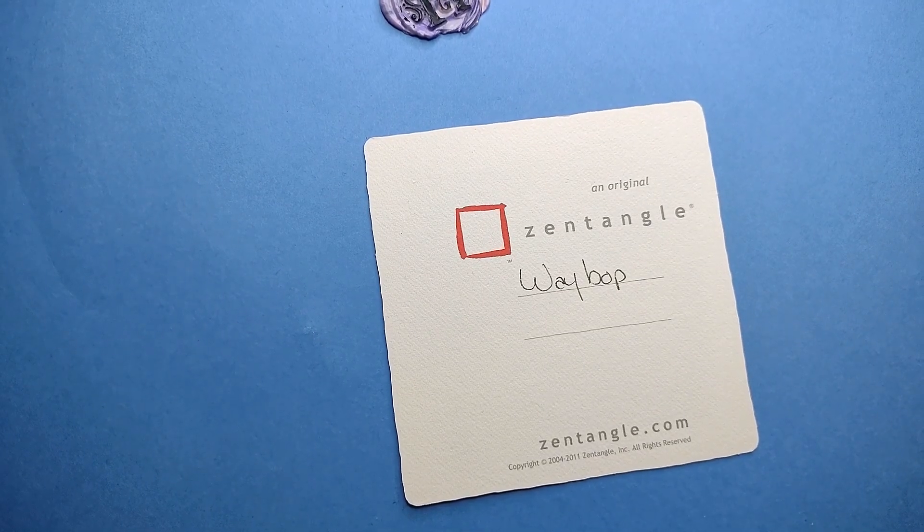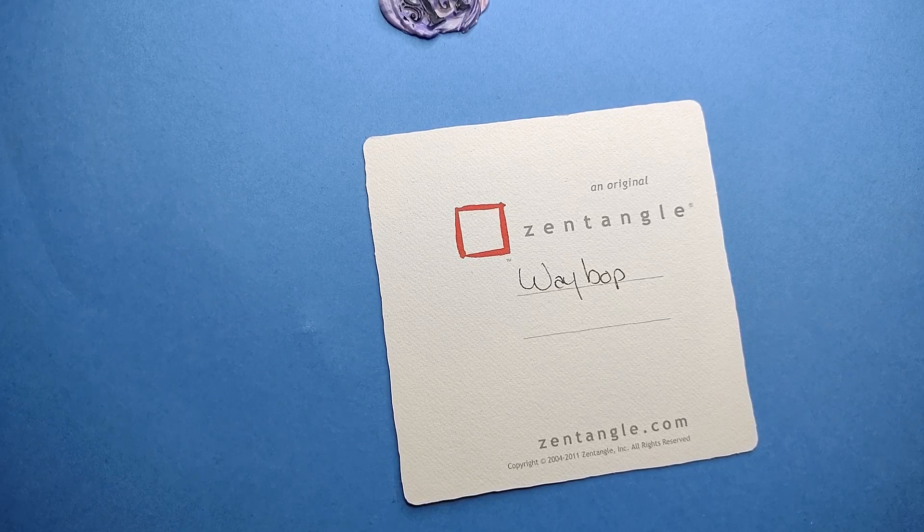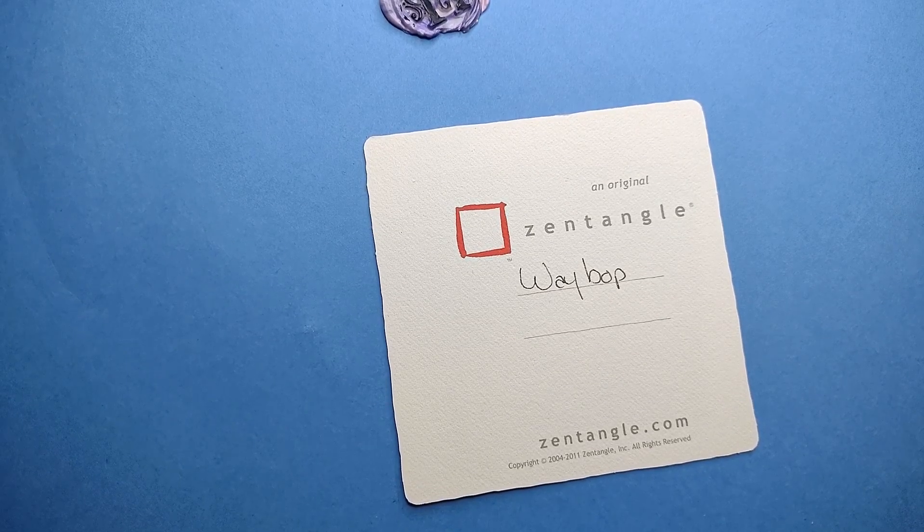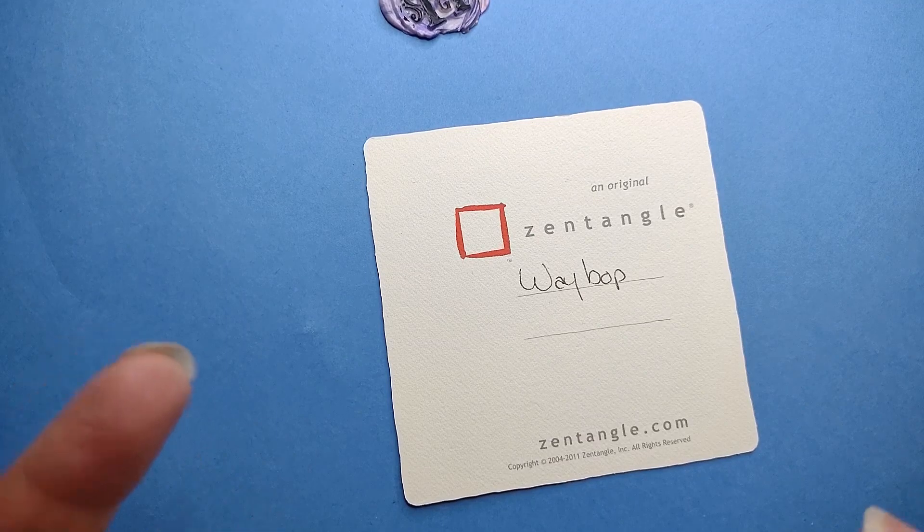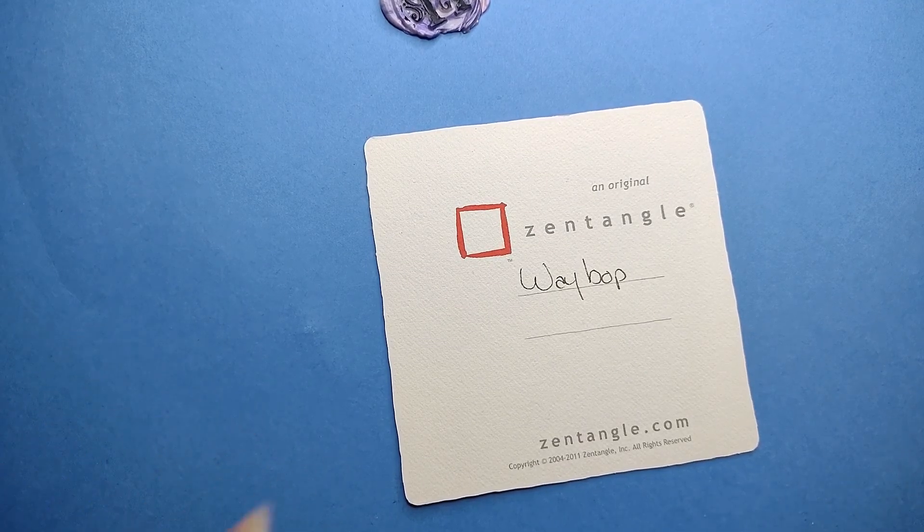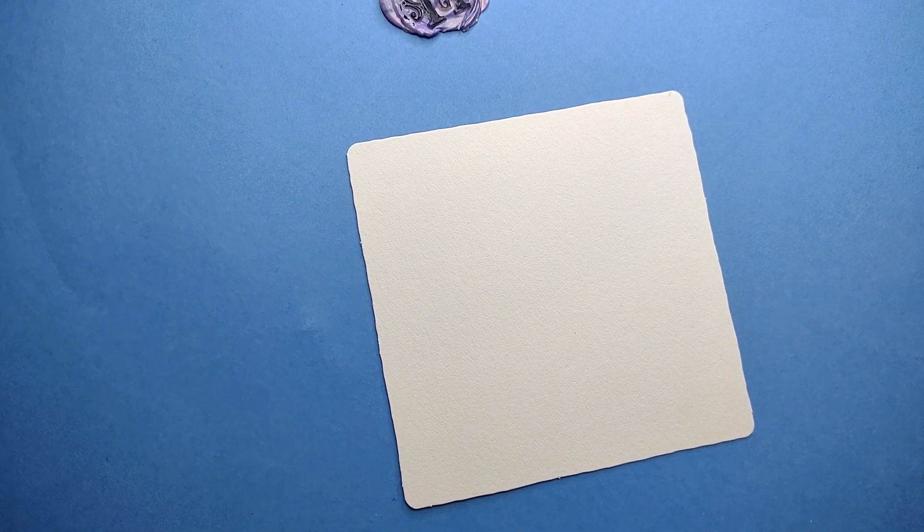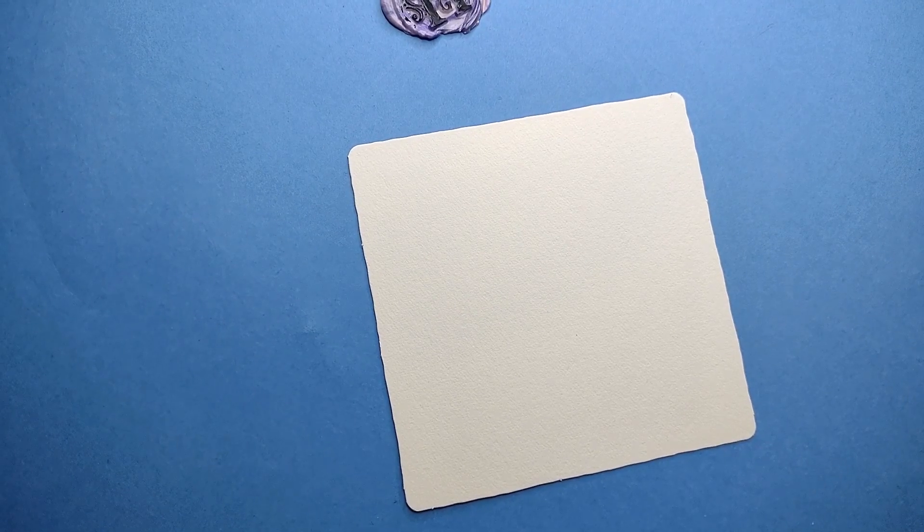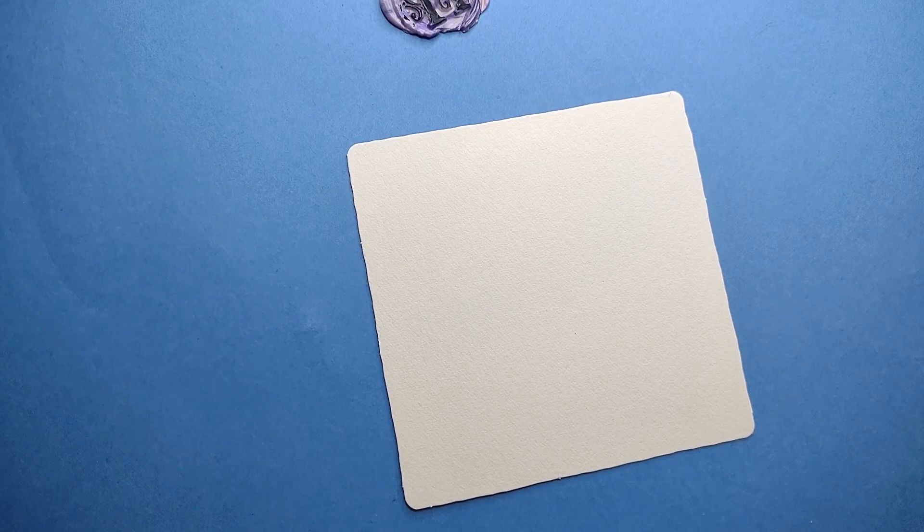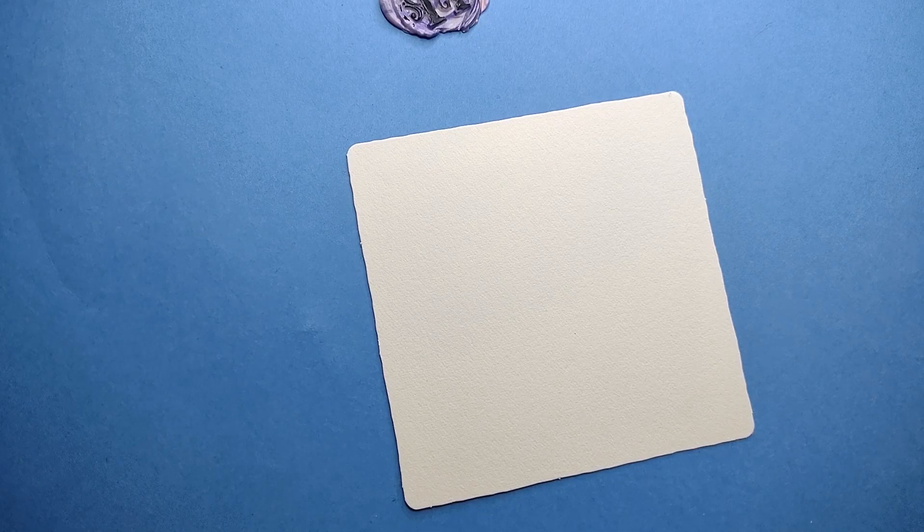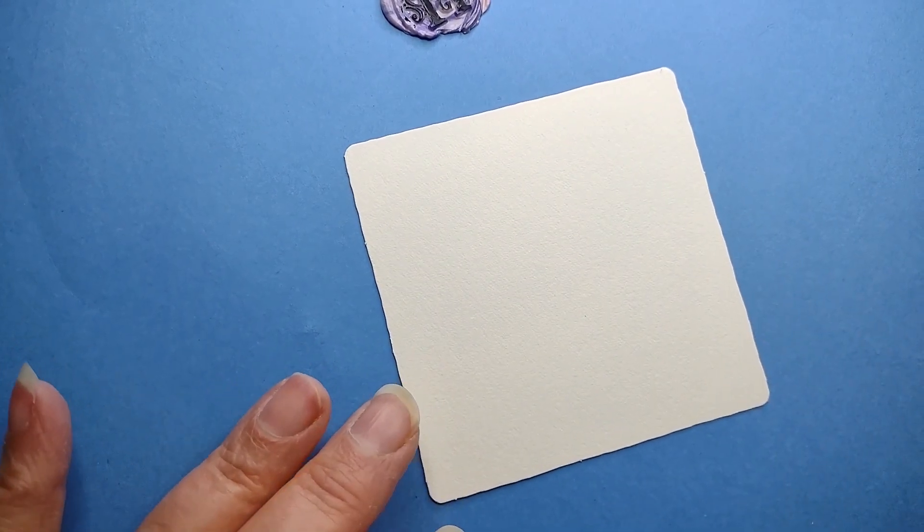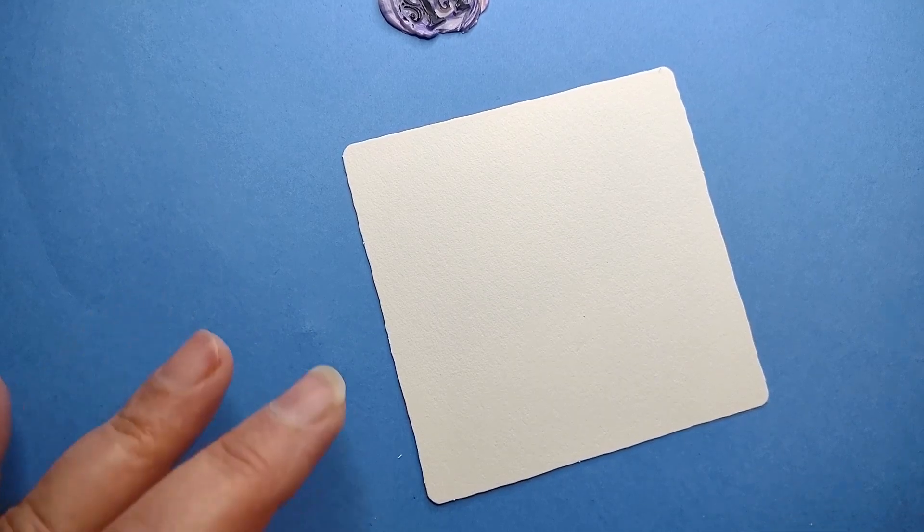Today we're going to take a look at the Tangle Waybop. In the description box is a link to my step out. This is a really neat tangle because it's kind of like interlocking rings, kind of like the Celtic knot idea, but generally those are difficult to do without some kind of a grid pattern and a lot of planning. So Rick Roberts and Maria Thomas of Zentangle created this, and it is absolutely brilliant. You can kind of have that effect, but without the planning, so we stay true to the idea of Zentangle.